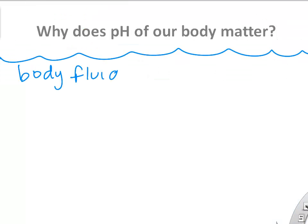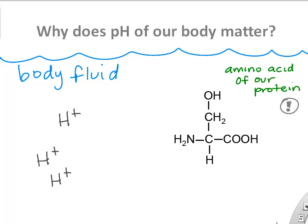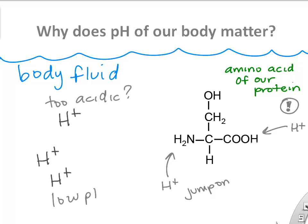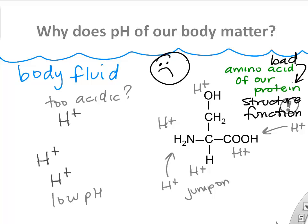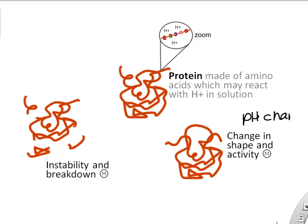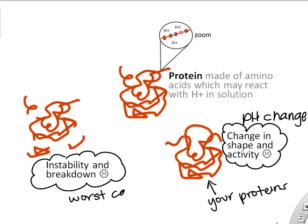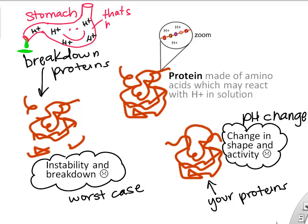Why does pH matter so much? We need to keep the pH and hydrogen ions fairly constant. Hydrogen ions like to react with amino acids, the building blocks of our proteins. We don't want hydrogen ions jumping on and off and interacting with our proteins — it can interrupt the structure and function of proteins, which would be very bad for our cells. If the pH was too low, too acidic, your proteins could actually break apart — that's how your stomach helps digest food.